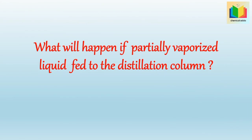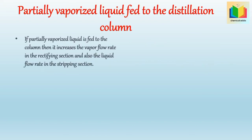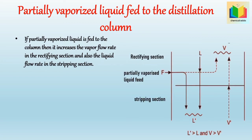Next question: what will happen if partially vaporized liquid is fed to the distillation column? If partially vaporized liquid is fed to the column, then it increases the vapor flow rate in the rectifying section and also the liquid flow rate in the stripping section, because partially vaporized liquid consists partly of vapor and partly of liquid. Hence we get L' > L and V > V'.